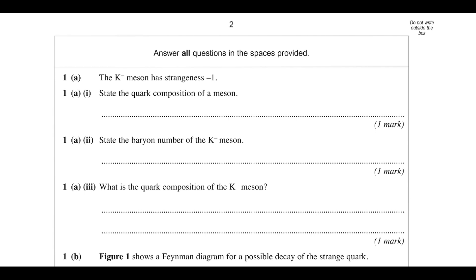So we've got the k-meson — it has a strangeness of minus 1. To achieve a charge of minus 1, it must contain an anti-up quark. A strangeness of minus 1 means it contains a strange quark, so that would be your quark configuration. The first question asked, more generally, to state the quark composition of a meson: it's one quark and one antiquark.